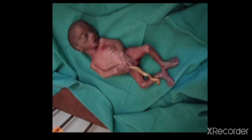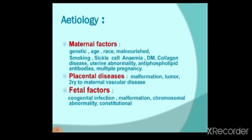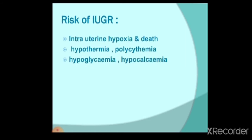What are the causes of low birth weight or IUGR? There can be one of three causes: either maternal causes, fetal causes, or placental disease. Those with IUGR or low birth weight are at risk for hypoxia and disease. They are also prone to hypothermia, polycythemia, hypocalcemia, and hypoglycemia.